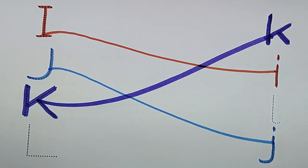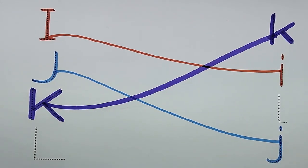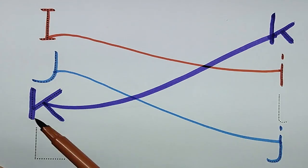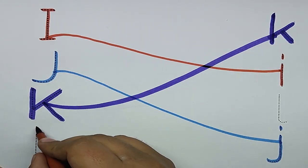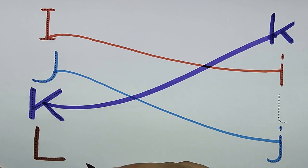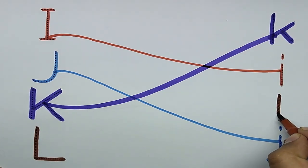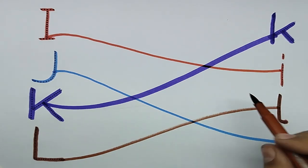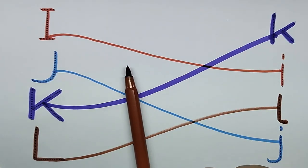Brown color. Capital L, L for line. Small l, L for lamp. Let's match L. Brown color.